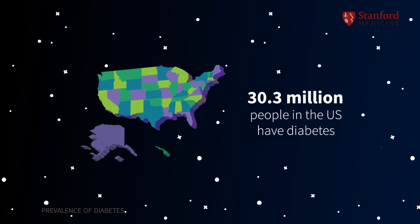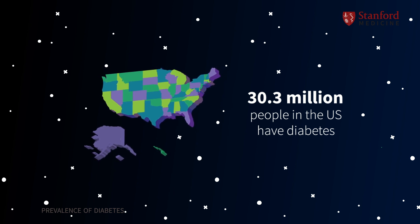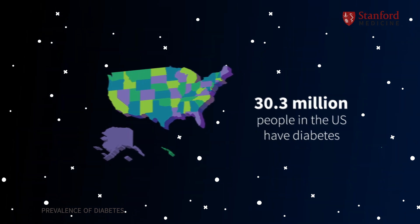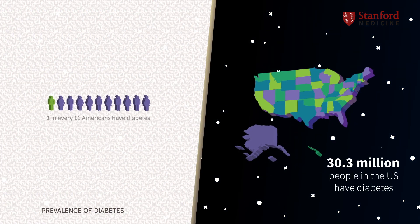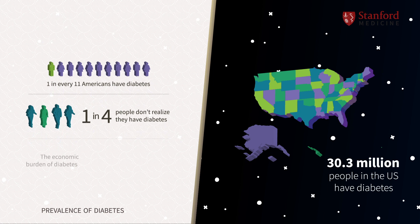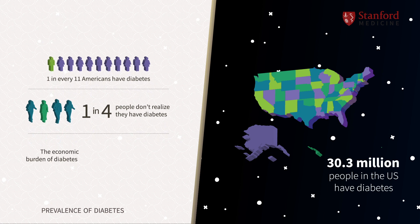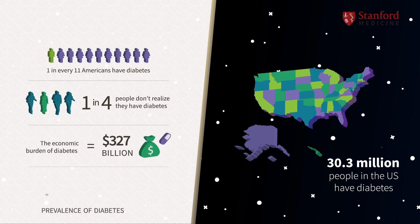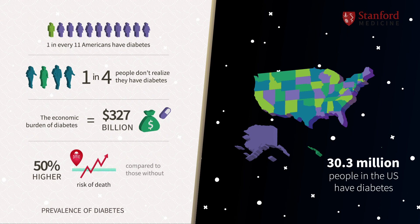30.3 million people in the United States have diabetes, or 9.4% of the U.S. population. This comes to roughly 1 in every 11 people. An estimated 1 in 4 people do not realize they have diabetes. The economic burden of diabetes in the United States is roughly $327 billion, and adults with diabetes are at a 50% increased risk of death compared to those without.